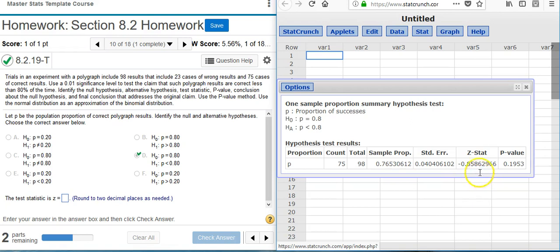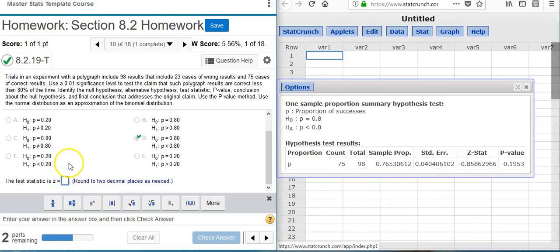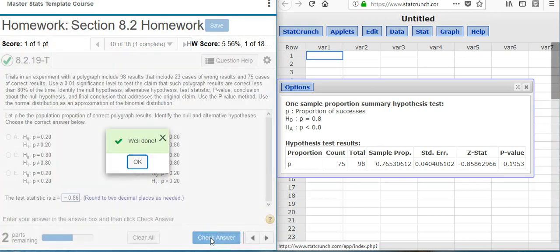Here in the results window, towards the end, we see the second to last value in that table is my Z statistic. So that's the number I'm going to slip in right here. Rounded to two decimal places. I check my answer. Well done!